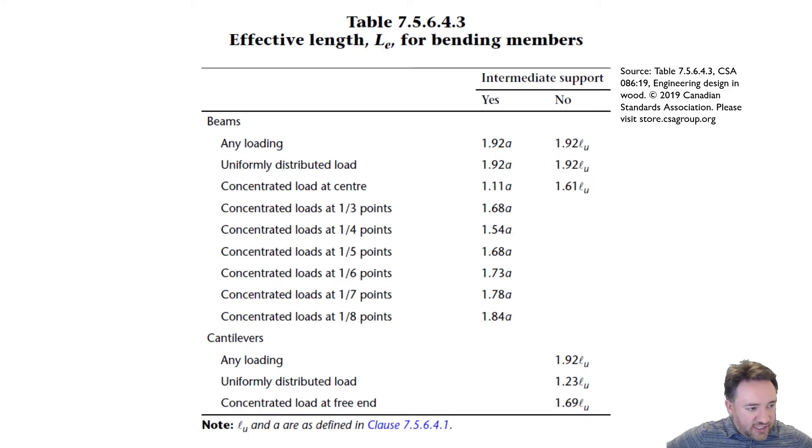The K factors depend on the load condition and whether we're dealing with a beam or cantilever. A cantilever is any part of the beam with a free end that can buckle sideways. Any loading in the table that doesn't fit uniformly distributed load, concentrated load at center, concentrated load at sixth points, etc., uses the default worst-case value of 1.92. A longer effective length makes higher slenderness, making the beam more likely to experience lateral torsional buckling.